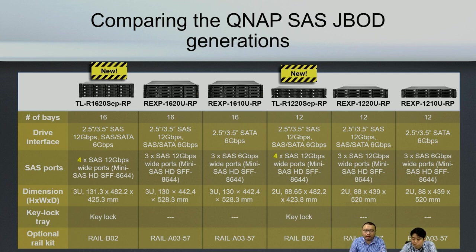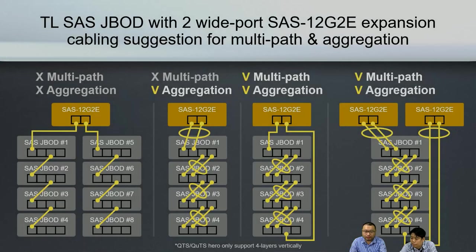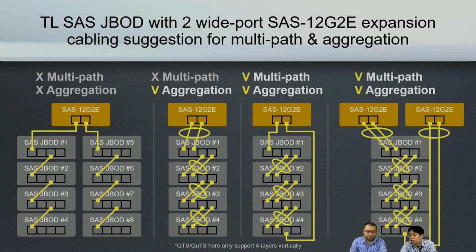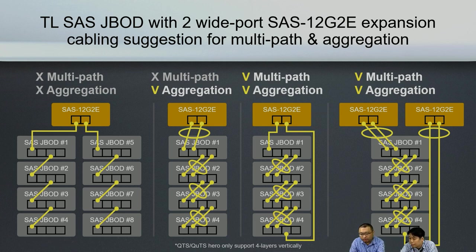Why did QNAP design the new J-Bar with so many SAS ports? Not just to achieve maximum total bandwidth of 192 gigabit per second, but also with our new QTS you get several added benefits. The traditional setup with the old IEXP and QTS 4.3 had no multi-pass and no aggregation support, and a maximum of 8 J-Bars. Now you can connect two cables together with aggregation — two cables to the first J-Bar and two more from the first to the second — giving you performance enhancement. However, the old EXP J-Bar only had three ports, so you couldn't connect two cables downstream.